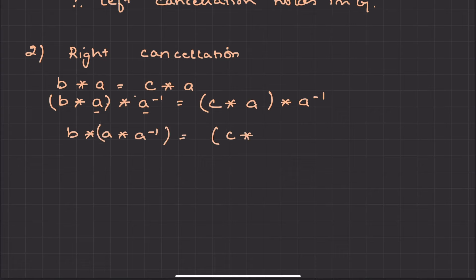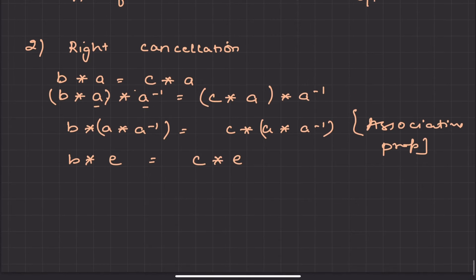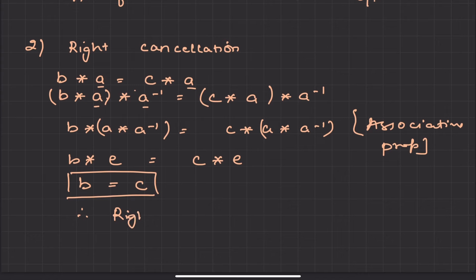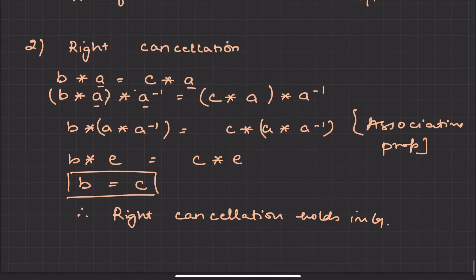Using the associative property, when we operate with the inverse we get identity. So we get b operation identity is equal to c operation identity, which gives b is equal to c. A was on the right side and it cancelled out. Therefore, right cancellation holds in G. This is how we prove it — it is a very simple theorem, but make sure to remember it as future theorems will be related to the same concept. Thank you.